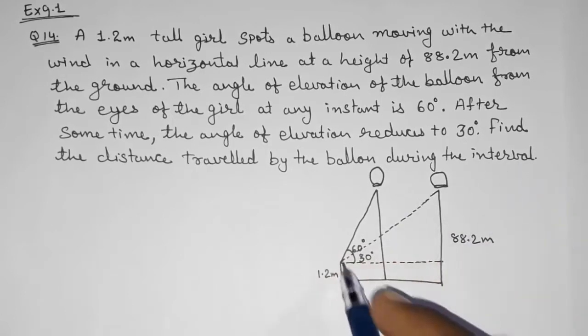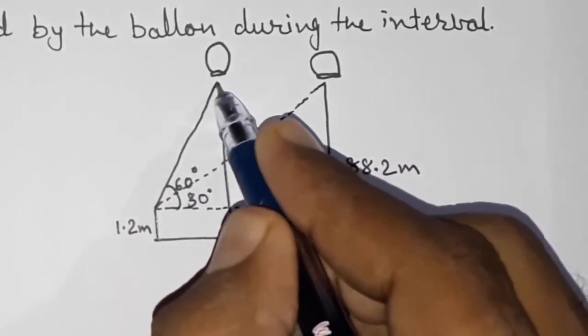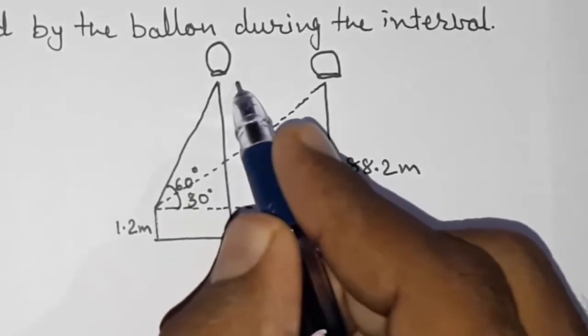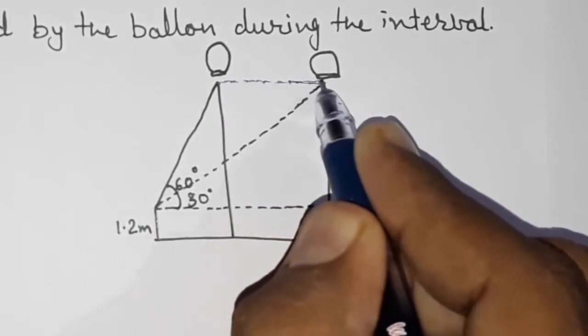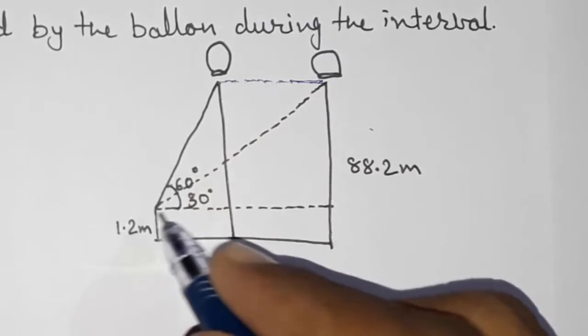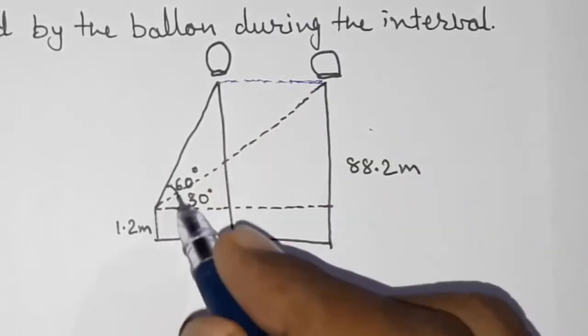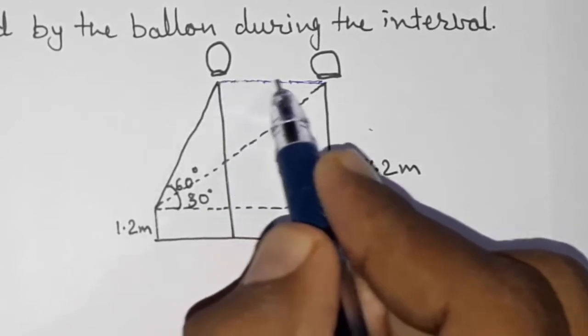Look here, this is a girl looking at the balloon. Now after some time the balloon moves from here to here. You have to find out this distance, but first it was 60 degree angle of elevation, now the angle of elevation is 30 degrees and they told us to find out this distance.